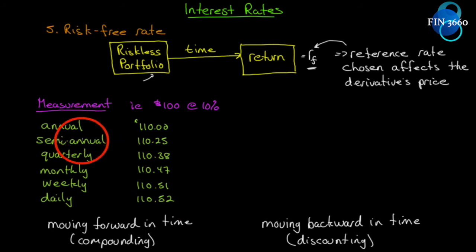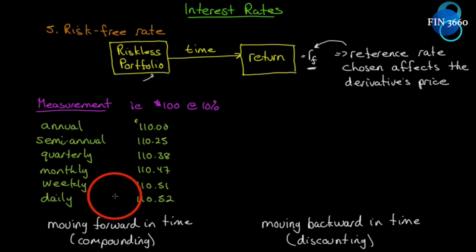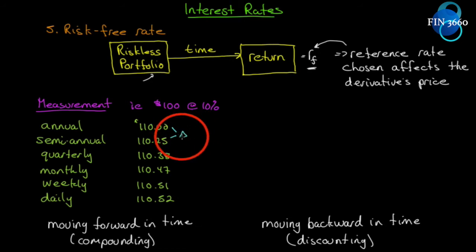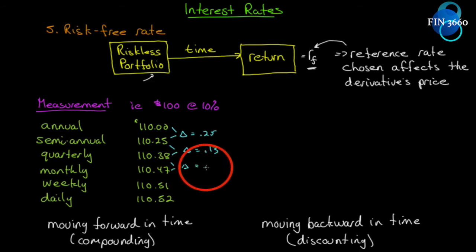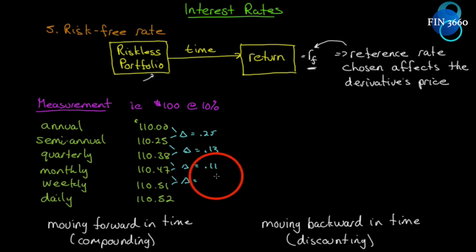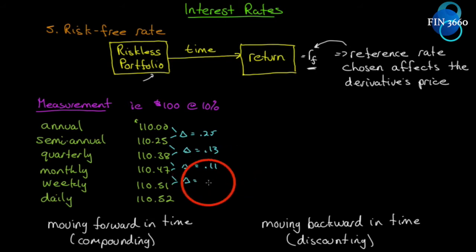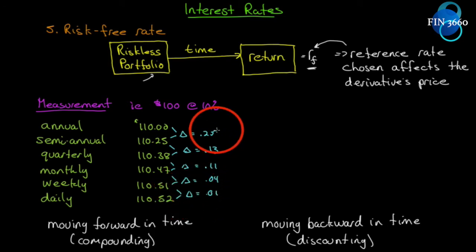The differences between successive compounding frequencies are decreasing: between annual and semi-annual the difference is $0.25, then $0.13, then $0.11, then $0.04, and finally $0.01. This is a decreasing series — it has a limit. As the ratio of the interest rate divided by the number of compounding periods approaches zero, the series converges.